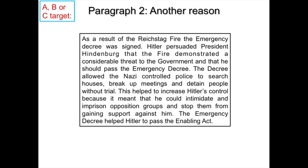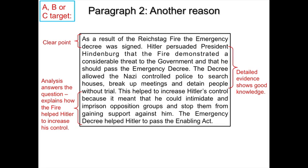The second paragraph gives another reason why the Reichstag fire helped to increase Hitler's power. It begins with a clear point: as a result of the Reichstag fire, the emergency decree was signed. Hitler persuaded President Hindenburg that the fire demonstrated a considerable threat to the government, and that he should pass the emergency decree. The decree allowed the Nazi-controlled police to search houses, break up meetings, and detain people without trial. The analysis explains that this helped increase Hitler's control because he could intimidate and imprison opposition groups. There is also a linking sentence: the emergency decree helped Hitler to pass the Enabling Act.